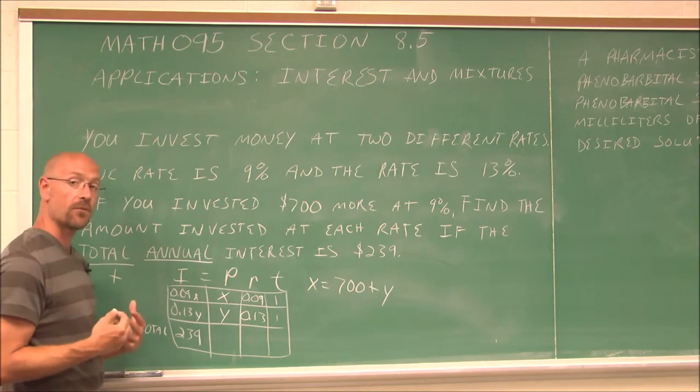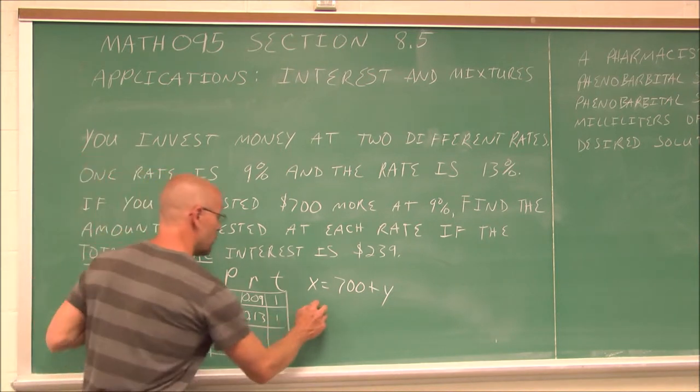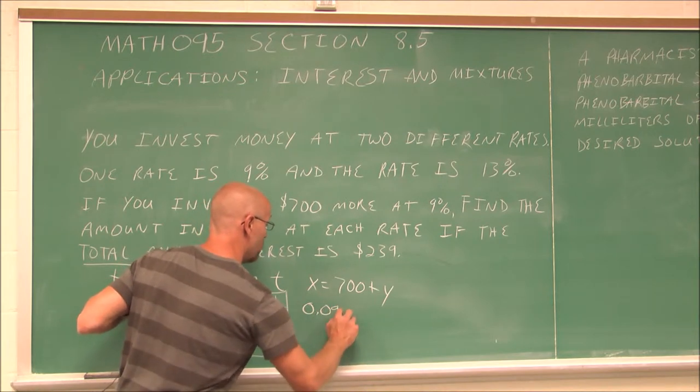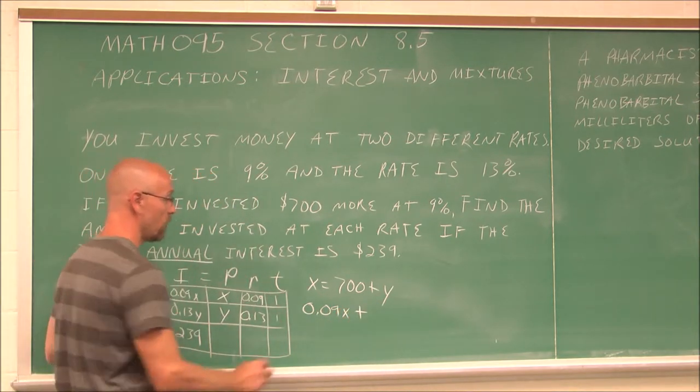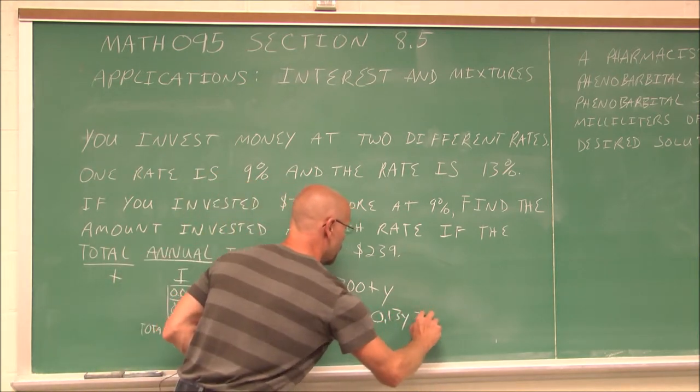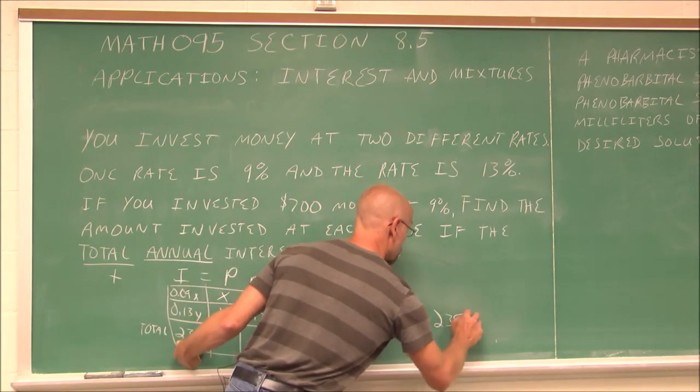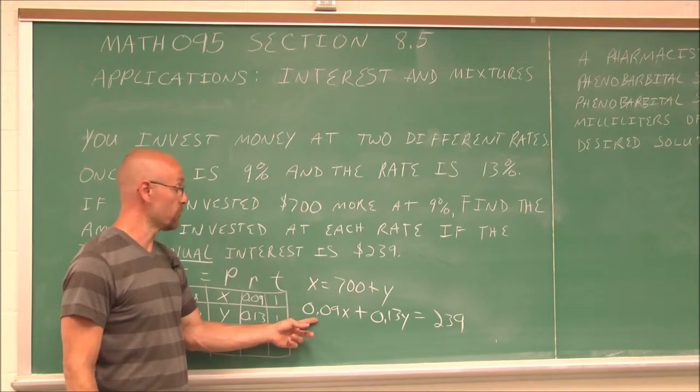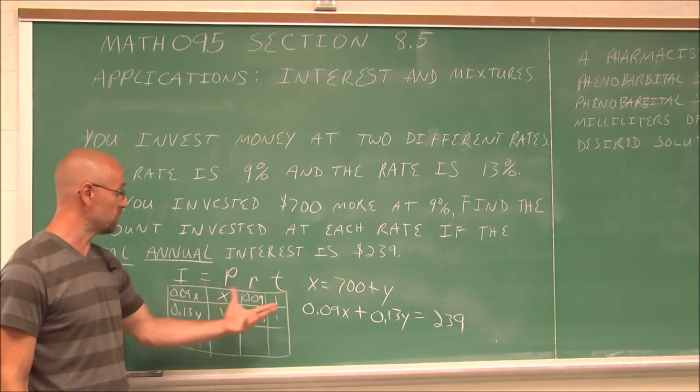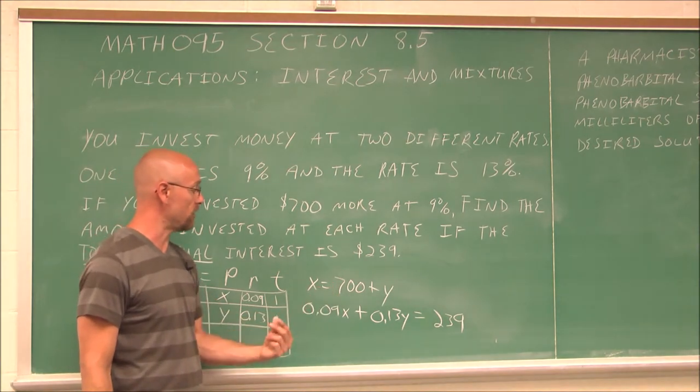So essentially, I have two equations here. I have the total interest, which is 0.09x plus 0.13y, will total $239. And now we have our two equations. Now, once we have those two equations and our table helped to organize that, we can go ahead and solve this.